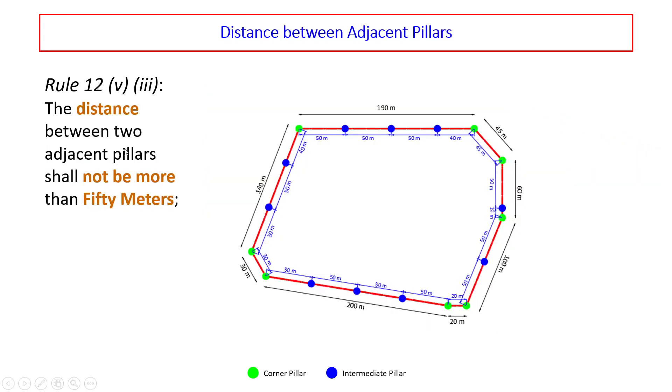The distance between two adjacent pillars shall not be more than 50 meters. The distance between these two corner pillars is 190 meter. So, we place intermediate pillar after 50 meter, 50 meter, 50 meter and this distance is 40 meter. Then, the distance between these two corner pillars is 45 meter. So, no need to place an intermediate pillar.